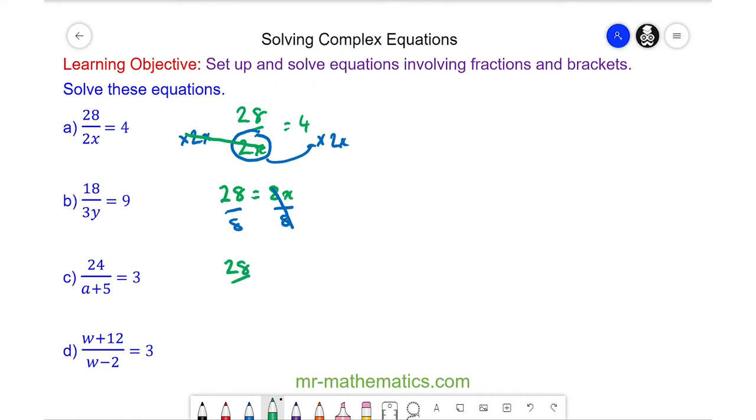So 28 divided by 8 is equal to x and we can simplify this fraction to make 14 over 4 or 7 over 2 which is 3.5. So for question a, x is equal to 3.5.